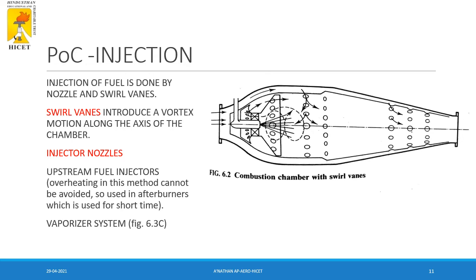The first process is injection. Injection of fuel is done by the nozzle and swirl vanes. Swirl vanes introduce a vortex motion along the axis of the chamber, mixing the injected fuel with the air supplied into the combustion chamber. Injector nozzles are designed either as upstream fuel nozzles or as a vaporizer system.